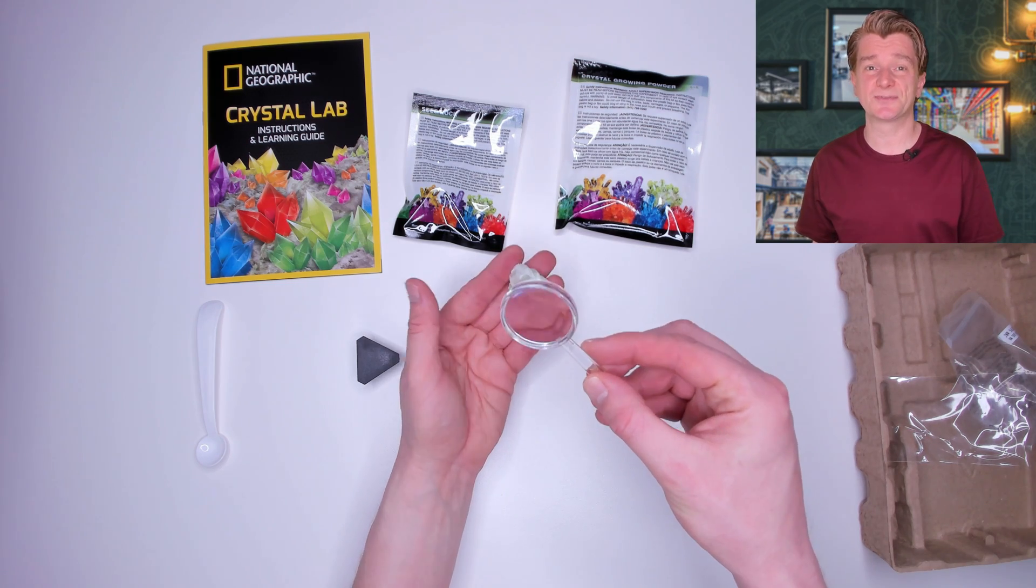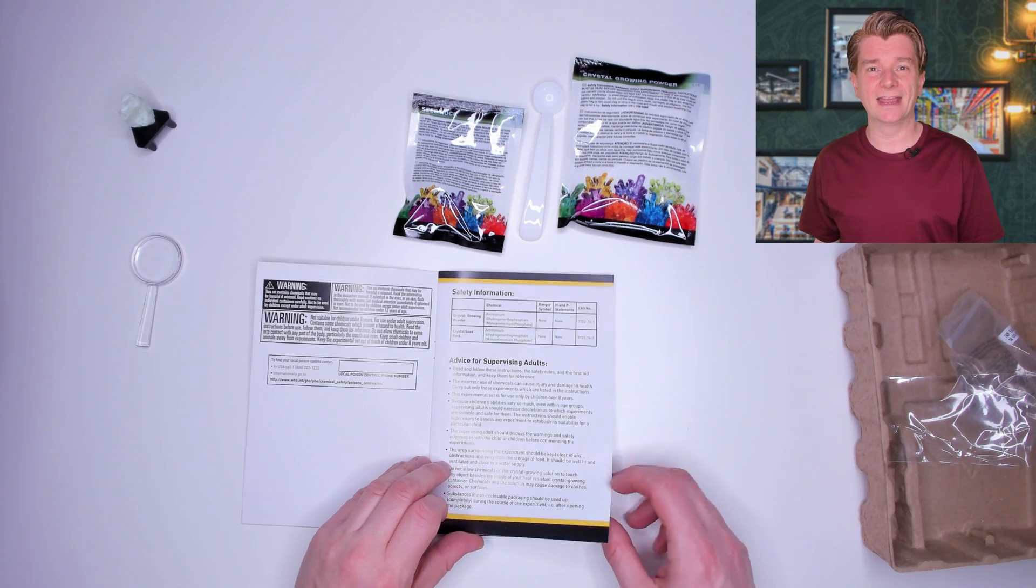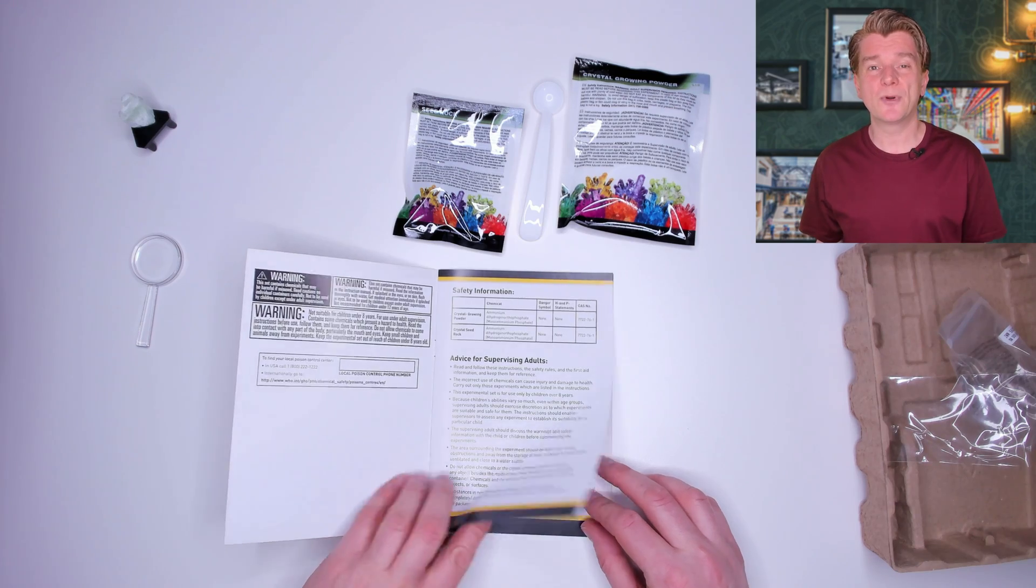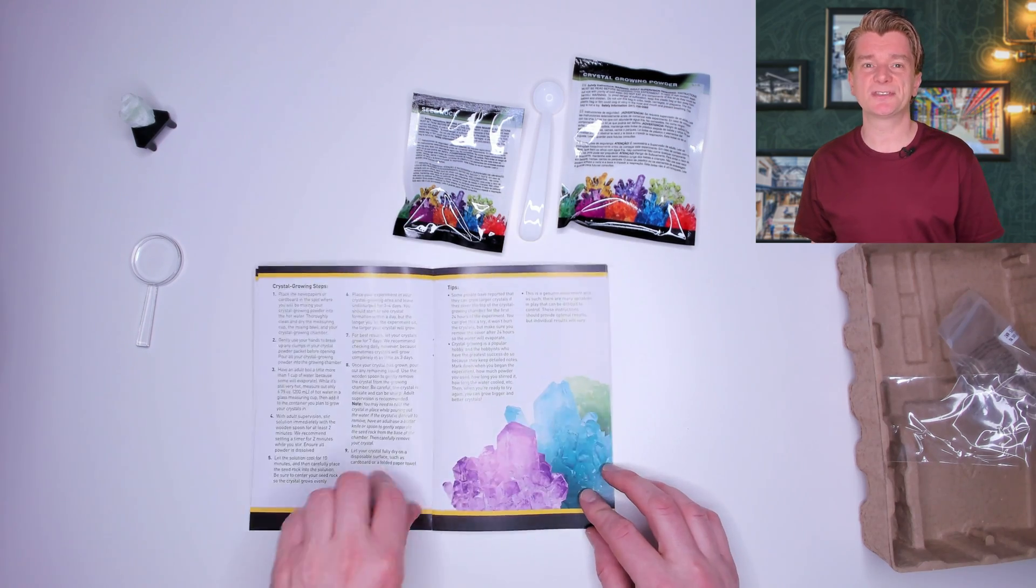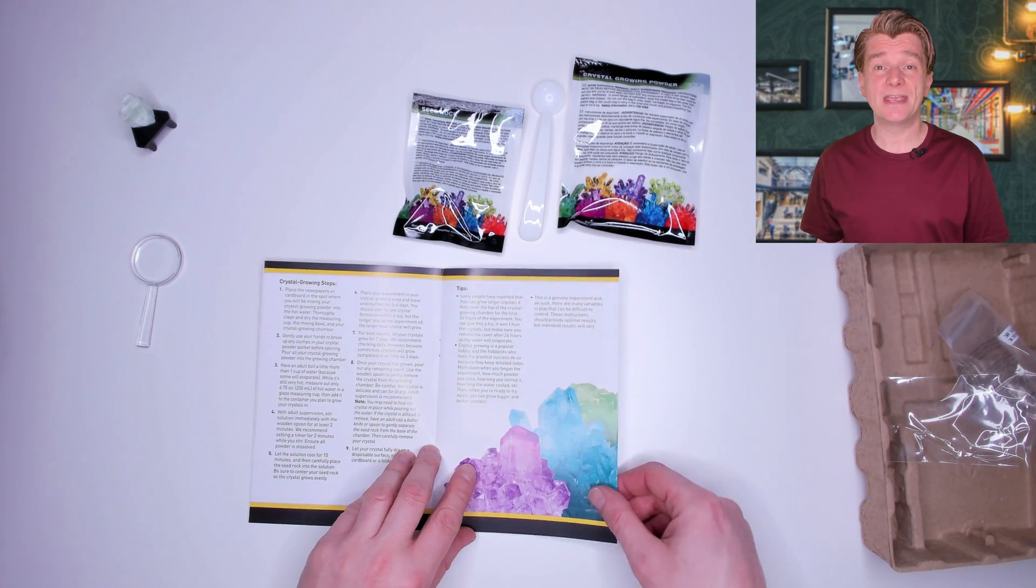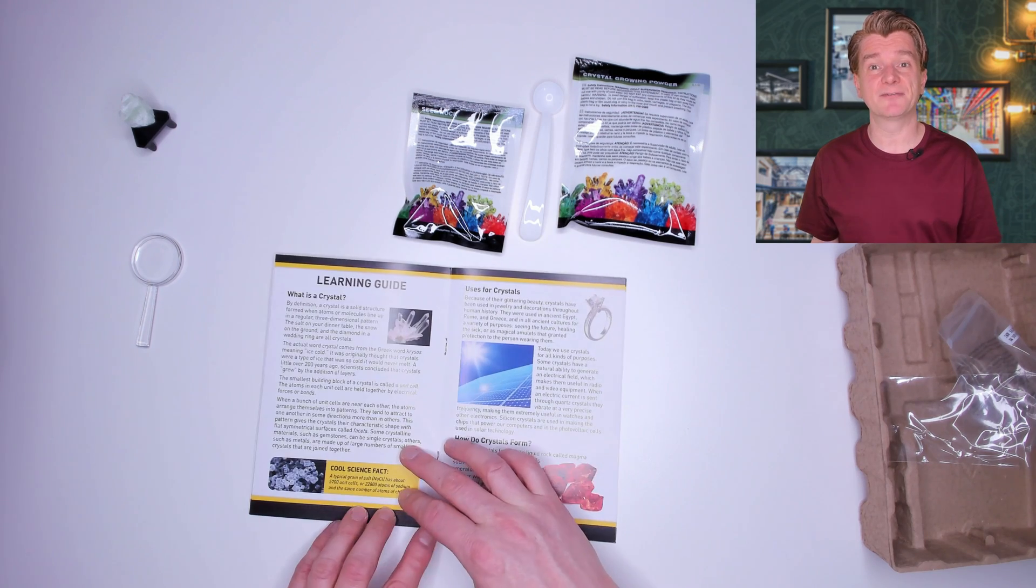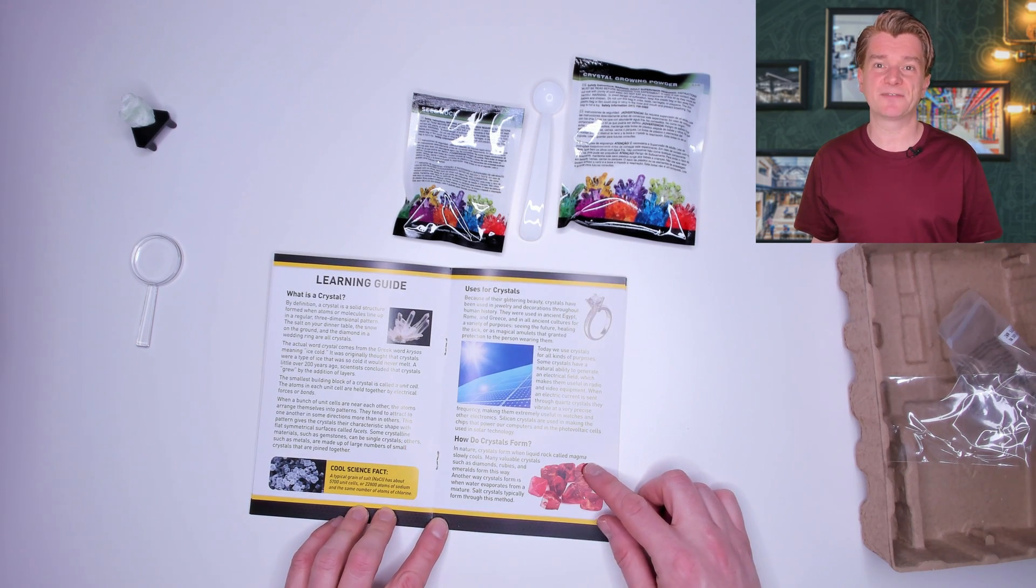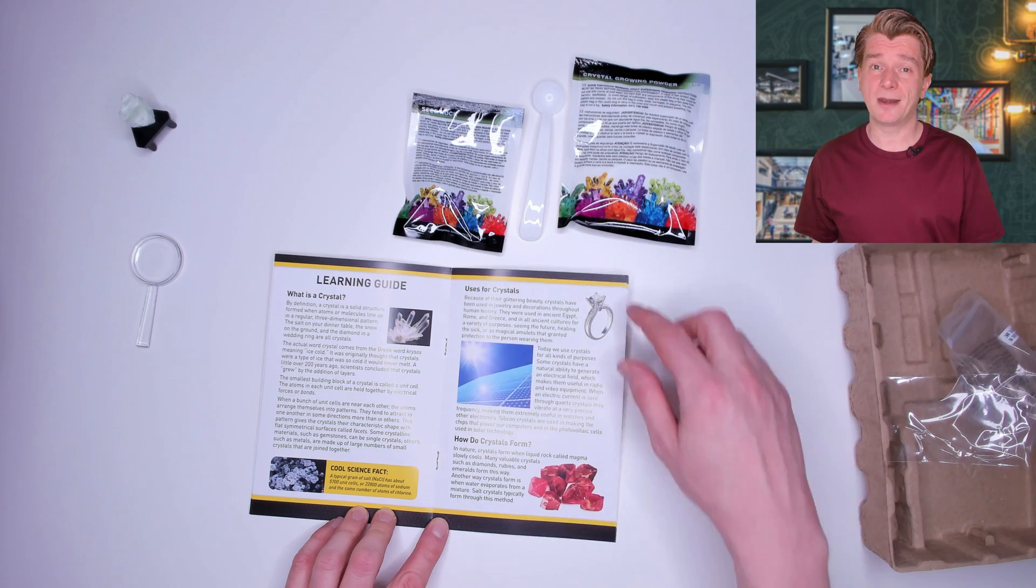You'd see more detail using the digital zoom on your phone camera. Let's take a look at the book. Warnings up front, then some instructions over two pages, a few pages with information about crystals and the different types and then two pages for notes. Pretty poor from a learning point of view.